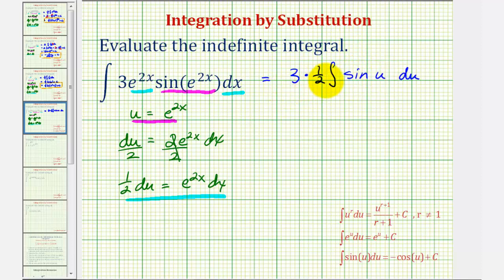Now we'll find the anti-derivative and write this in terms of x. We have three-halves times the anti-derivative of sine u, which equals negative cosine u plus C.